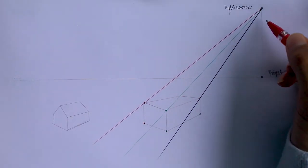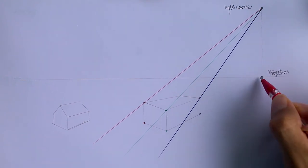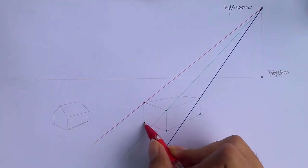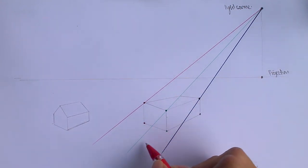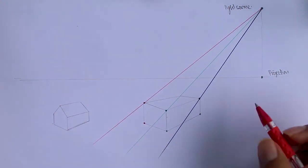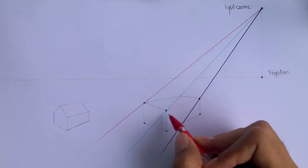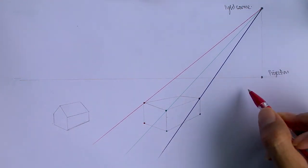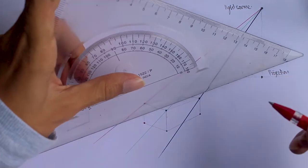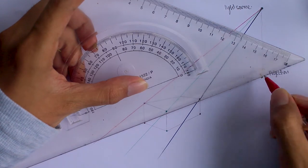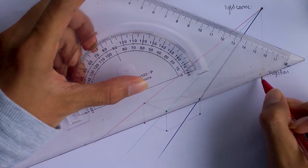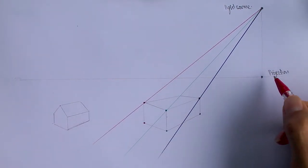Now for the key step: go to the projection point placed on the reference line and mark lines from it passing through the points placed on the object. Follow the same procedure as drawing lines from the light source, but now drawing from the projection point. Mark red with red, green with green, and black with black.